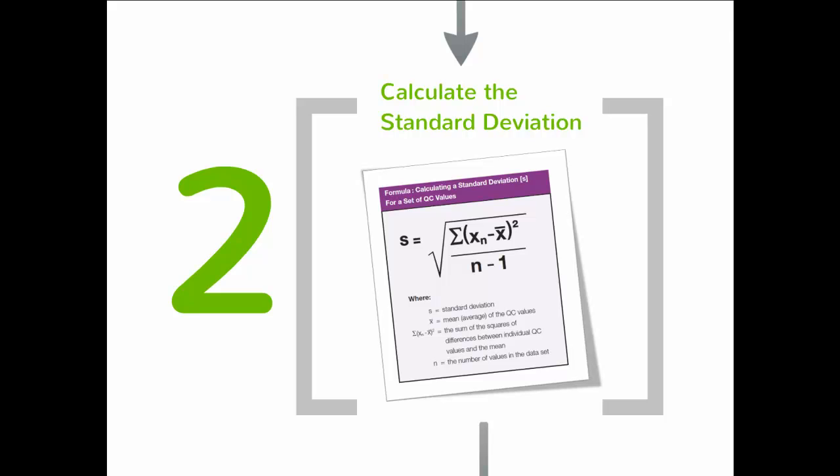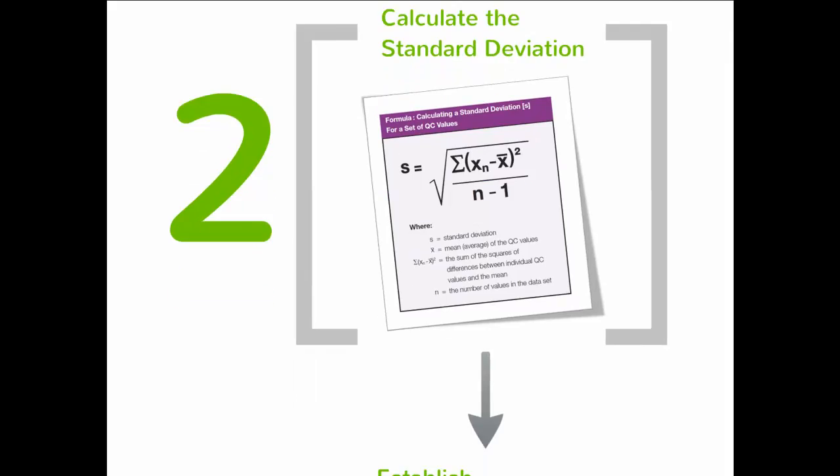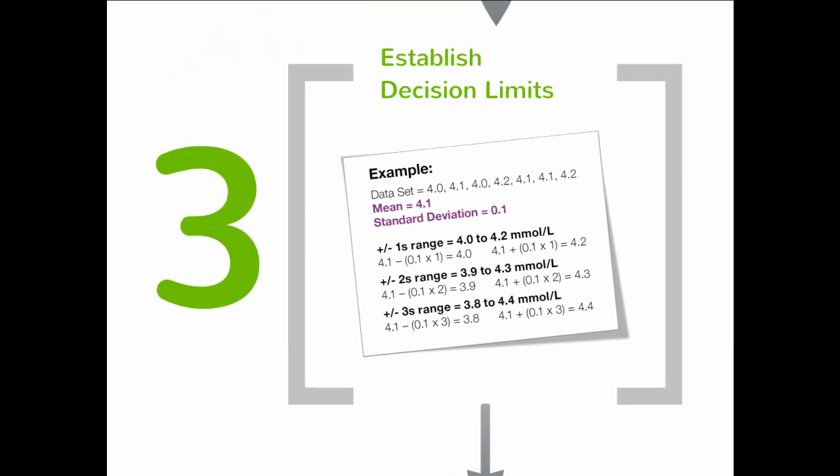Using the mean and standard deviation, the laboratory can establish decision limits. These limits are used to define what is considered an acceptable control result. Decision limits are established at ±1s, 2s, and 3s from the mean.